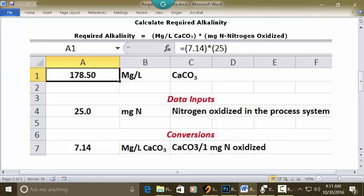So let's see how we put this in an Excel spreadsheet. Go to a blank spreadsheet. In C1 you put calcium carbonate.